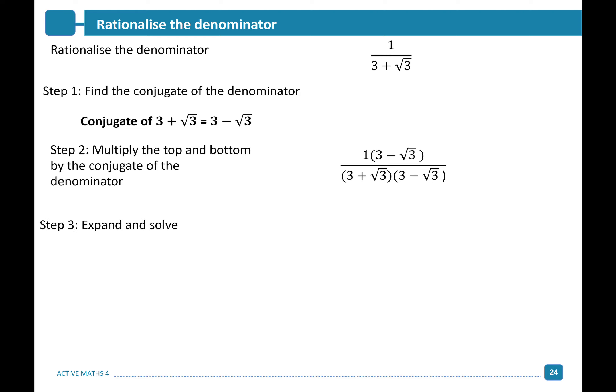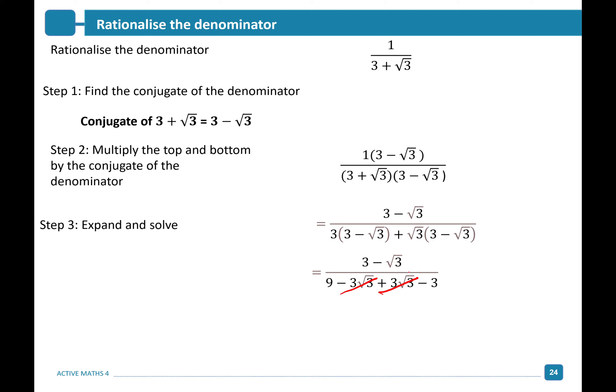We're now going to expand and simplify. Looking at the top first: 1 times 3 gives us 3, and 1 times minus root 3 gives us minus root 3. On the bottom, expanding the brackets: 3 times 3 gives us 9; 3 times minus root 3 gives minus 3 root 3; plus root 3 times 3 gives plus 3 root 3; and root 3 times minus root 3 gives minus 3. Simplifying by adding like terms on the denominator — 3 root 3 minus 3 root 3 leaves 0 — and we're left with 3 minus root 3 all over 6.